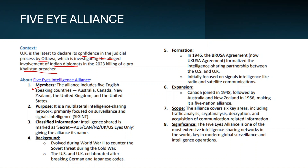The background of this alliance can be traced back to World War II, when it was formed to counter the Soviet threat during the Cold War. It was originally formed in 1946 as the BRUSA Agreement — Britain-US Agreement — later known as the UKUSA Agreement. Canada joined in 1948, and New Zealand and Australia joined together in 1956, making it a five-nation alliance.